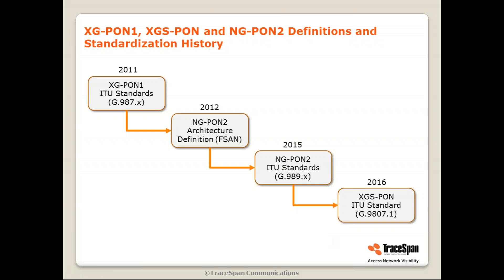The idea was: take the protocol and frame structure of NG-PON 2, remove the different wavelengths and wavelength tuning mechanisms, and stick with a simple single-wavelength protocol which in the future can be expanded back to NG-PON 2. So historically, XGS-PON came after NG-PON 2, but in terms of deployment it got much more traction and is much more widely deployed today.